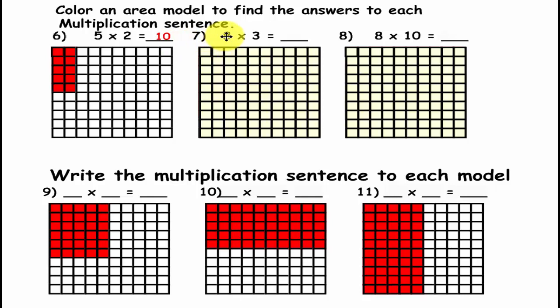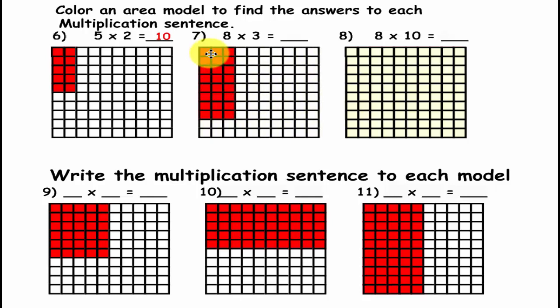Now in this one, we are going to color in 8 rows and 3 columns. So if you did that correctly, we have 1, 2, 3, 4, 5, 6, 7, 8 rows and 3 columns. So 3 times 8 is 24 of those.